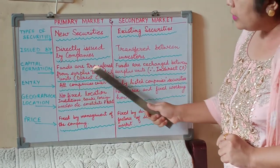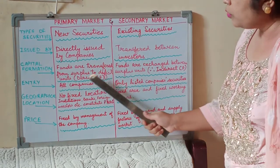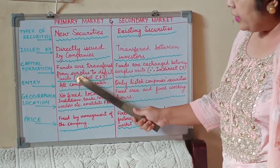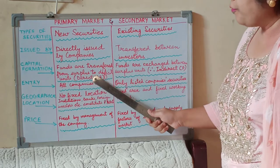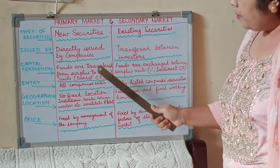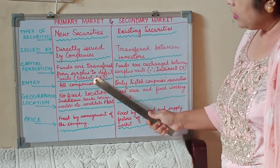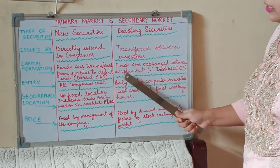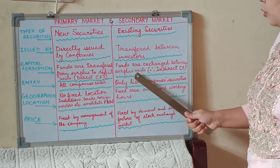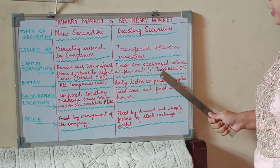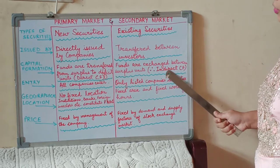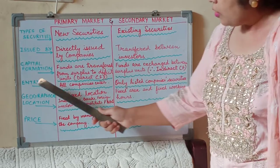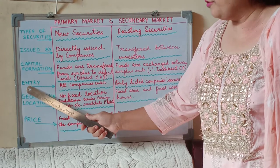The third basis is capital formation. Since the funds are transferred directly from surplus to deficit units, direct capital formation takes place in the primary market. But on the other hand, the funds are exchanged between the surplus units only. Therefore, indirect capital formation takes place in the secondary market.